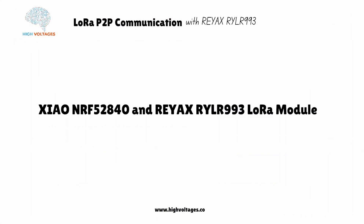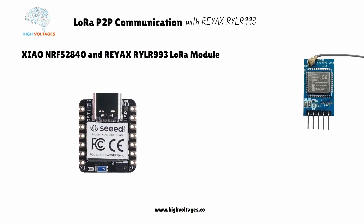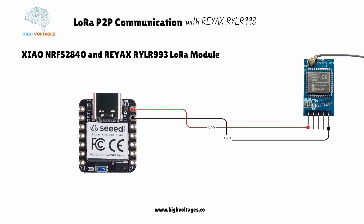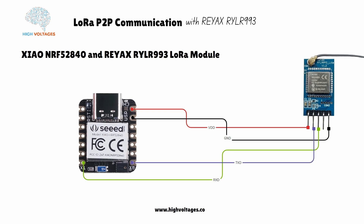Now let's look at how to connect the Seeed nRF52840 with the RYLR993 LoRa module by REYAX. We connect VCC to the VUSB or 3.3V of the Seeed board, ground to any ground pin, RX of the LoRa module to TX of the Seeed board (pin 6), and TX of the LoRa module to RX of the Seeed board (pin 7).